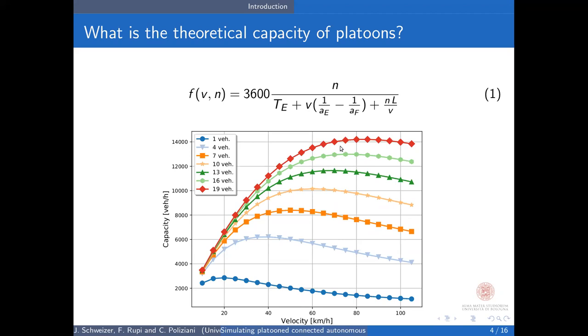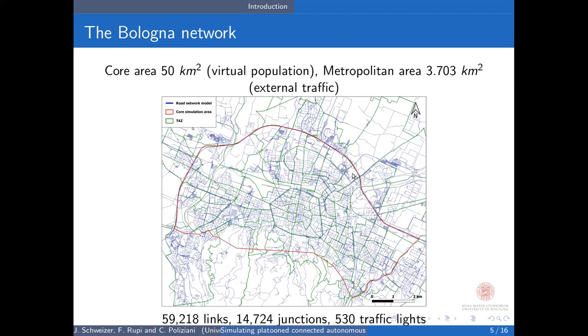Yeah, so what we were interested in, how does it look like in the real world, in a real application, and this is why we were trying to do, so that's the network we were looking at. There is a core area that, this is what you can see here, is roughly 50 square kilometers. And here we had a virtual population, so or synthetic population, so we are simulating house, or door-to-door trips, really, with all kind of modes. And we also have a larger metropolitan area, you cannot see that, that's much bigger, that we modeled, let's say we had a simplified model, where each city was basically a node. And we used that to simulate the external traffic, or the through traffic, through Bologna.